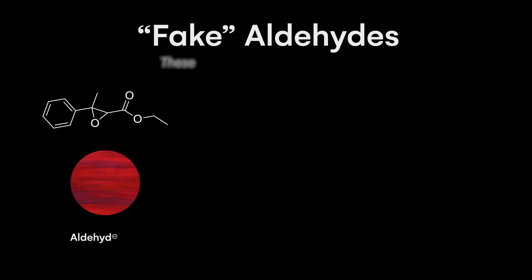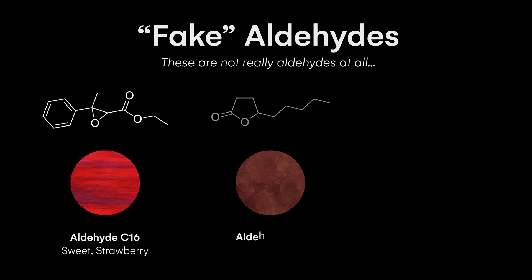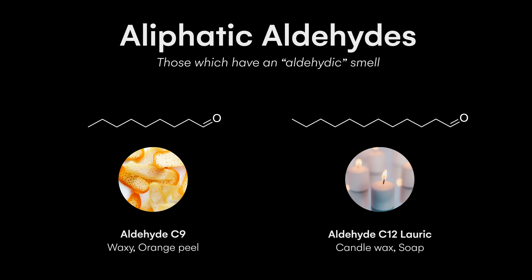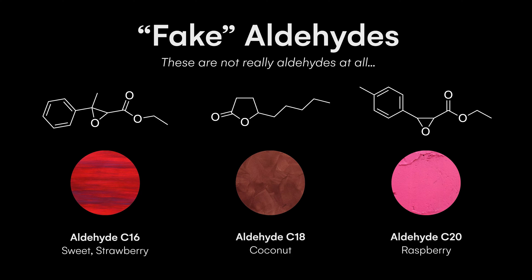So essentially the naming is completely false — but that didn't stop other similar molecules popping up. Next there was aldehyde C16, which smells a little bit like strawberries; aldehyde C18, which smells a little bit like coconut; and even aldehyde C20, which smells a little bit like raspberries. None of these molecules are actually aldehydes. In fact, for the real aliphatic straight-chain aldehydes, after about 15 carbons in the chain you can't even smell the molecule anymore — so aldehyde C16, 18, and 20, even if you made those true molecules, they wouldn't have a smell.